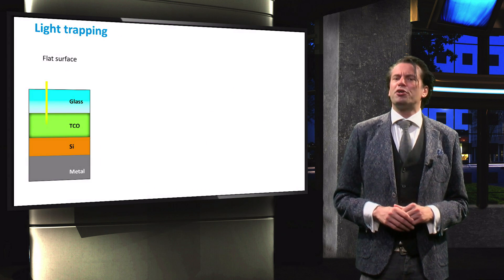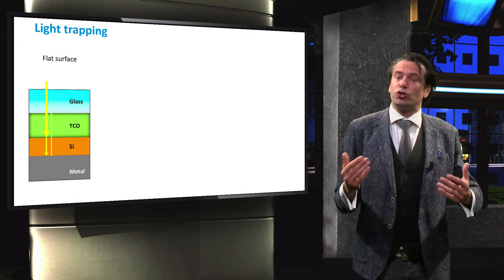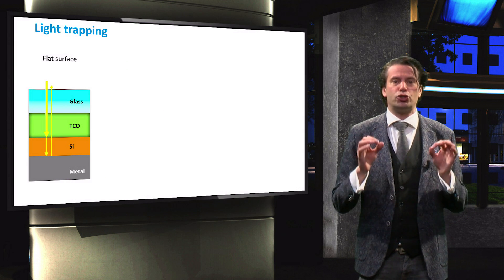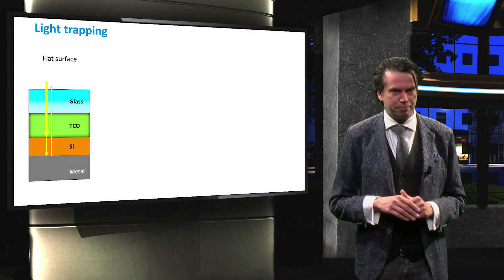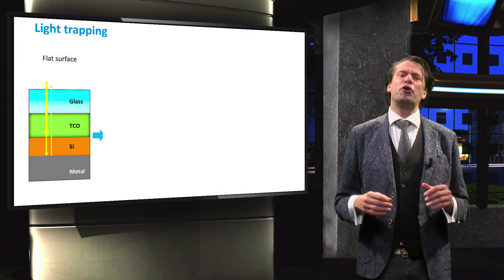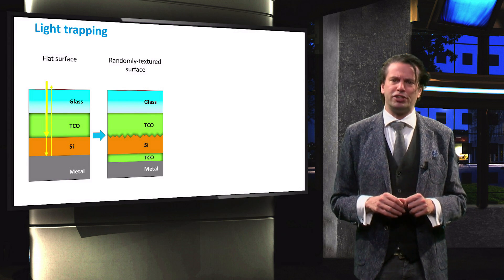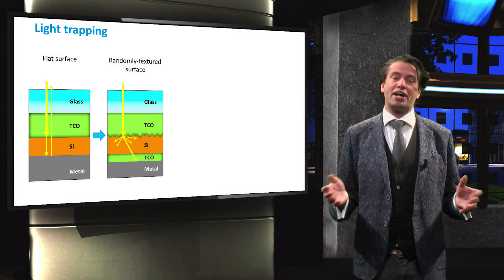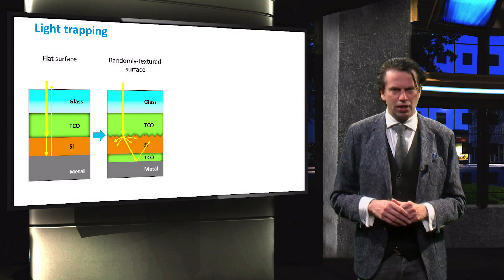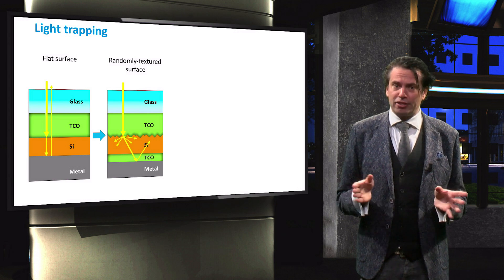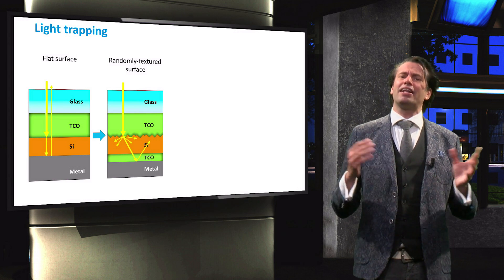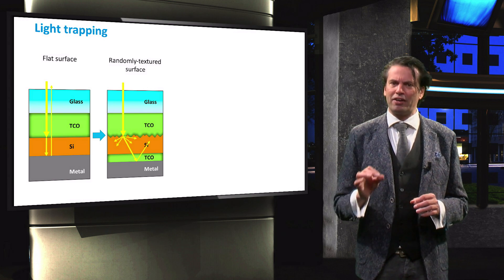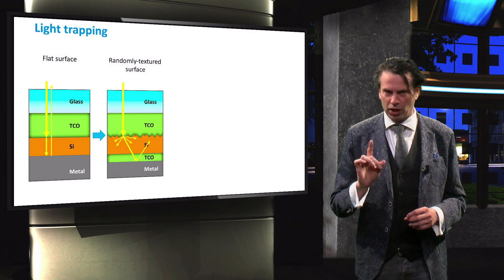If a light beam under normal incidence encounters a solar cell with a flat surface, it will travel through the solar cell following the shortest possible path. Now, if we randomly texture the surface of the TCO layer, incident light will be scattered into a wide range of angles. Light is now deflected from the straight path and the path length of the light through the absorber layer is increased, without increasing the geometrical thickness of the absorber layer.